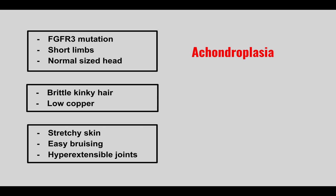The next condition: a little boy with brittle, kinky hair and low copper levels. This is Menkes disease.